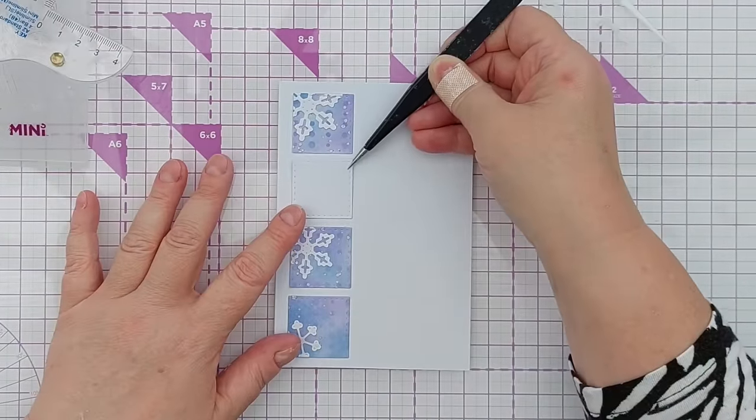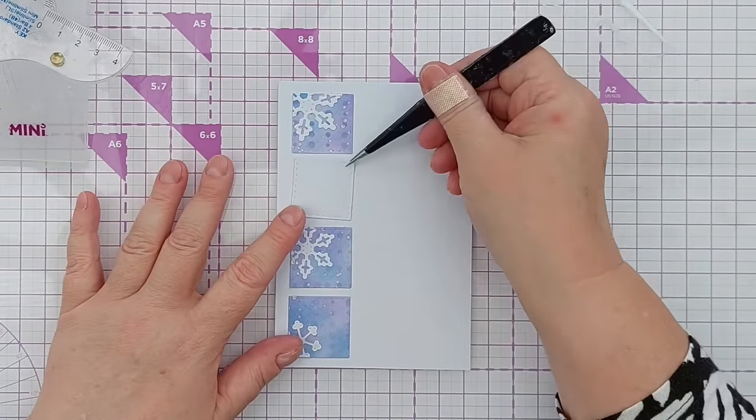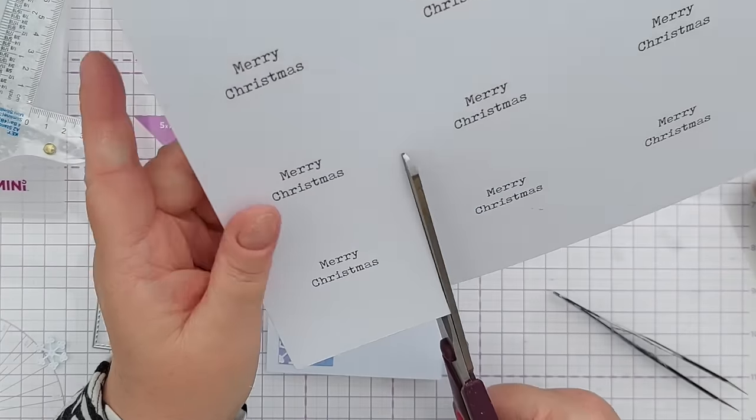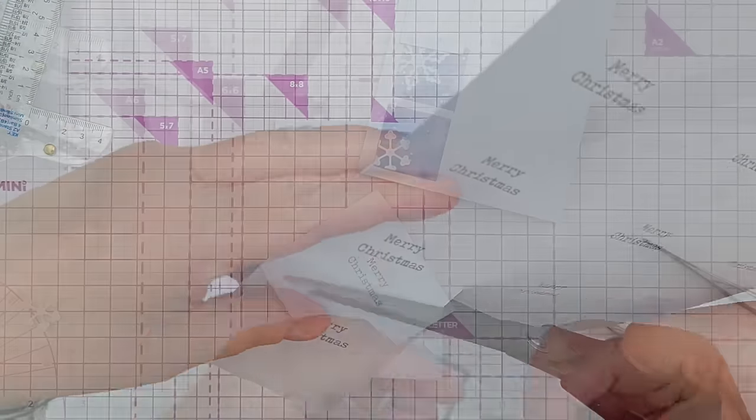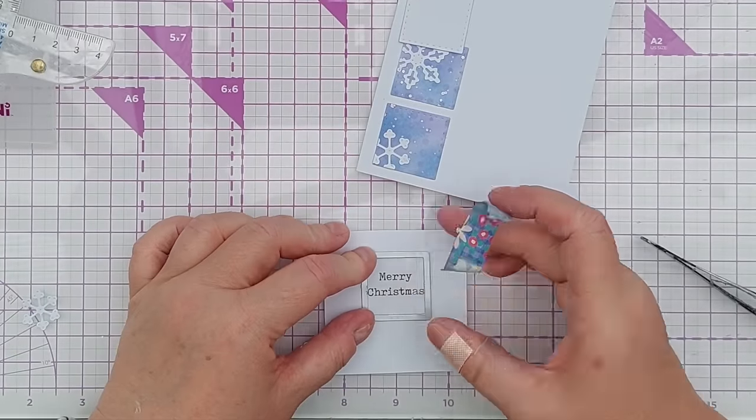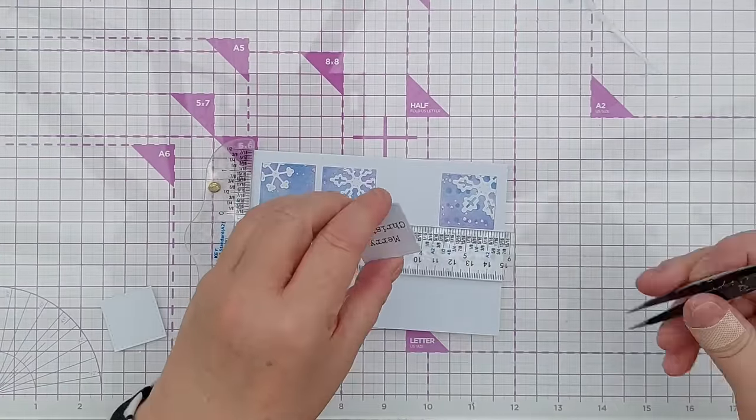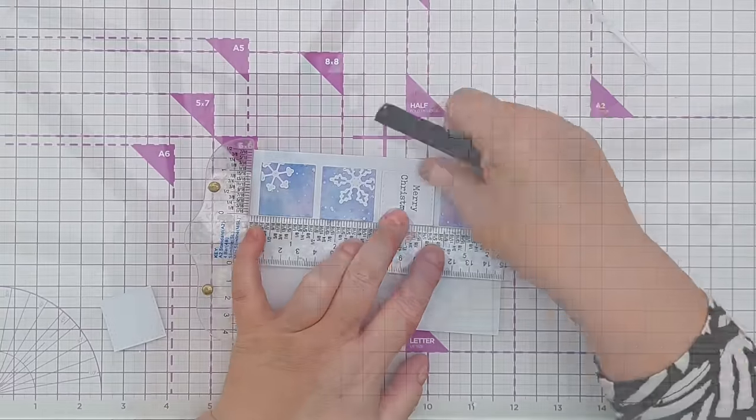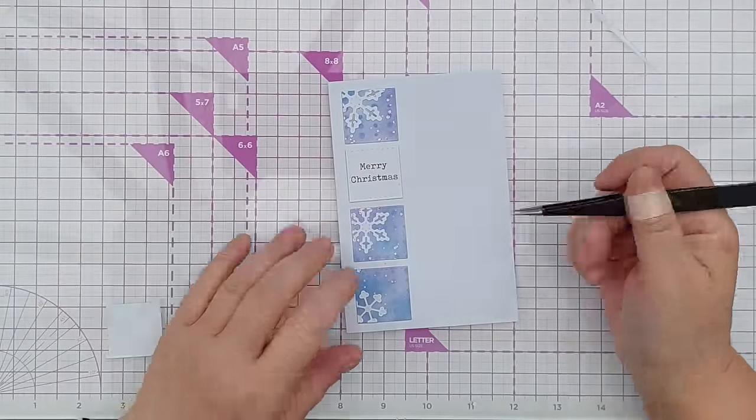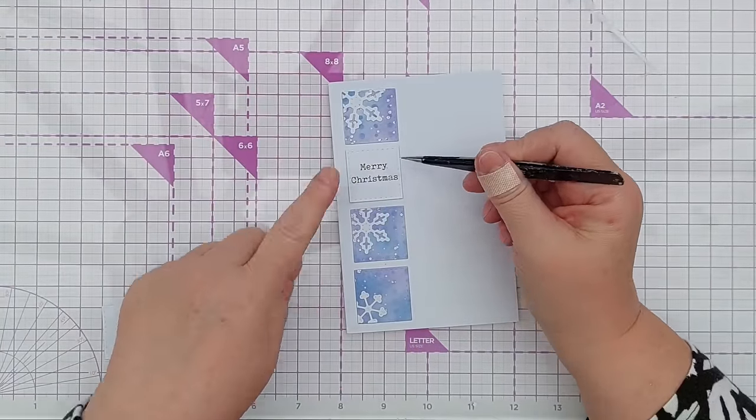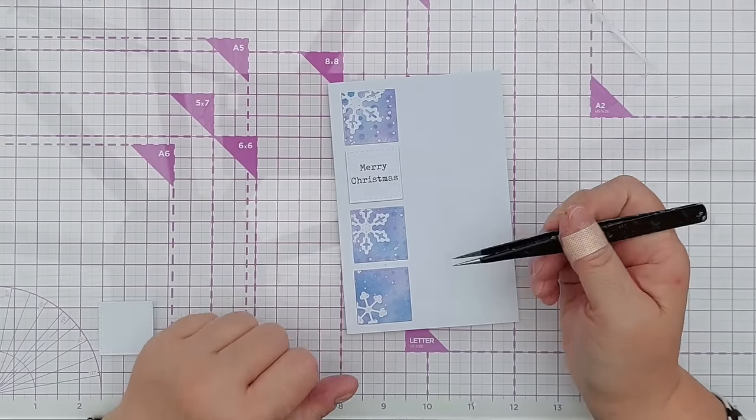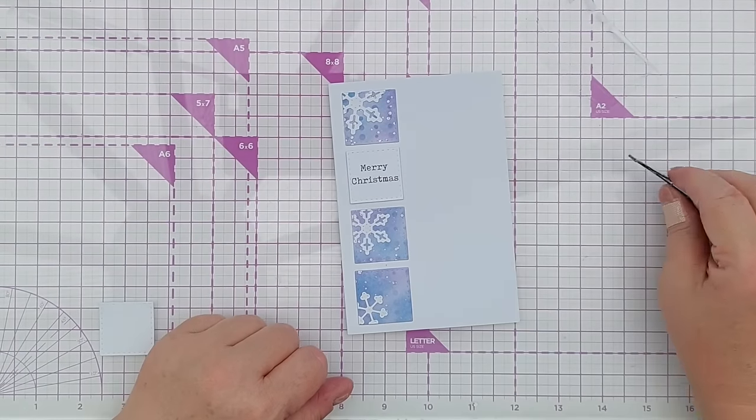Right, I'm just going to go and print a sentiment on some white card. Okay, I've printed a sheet of sentiments here, and now I can add that in the gap that I left. You could, if you had a stamp, you could obviously stamp on this square, or you could omit the square altogether and just stamp straight on the card base or card panel.